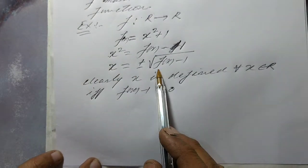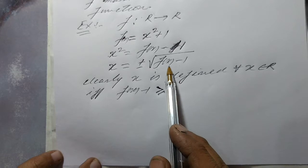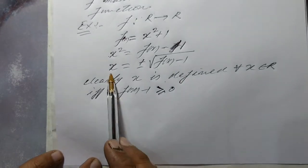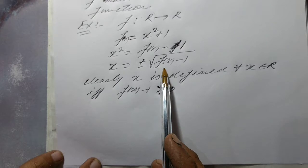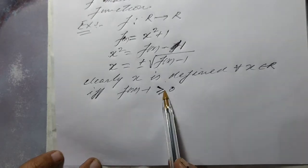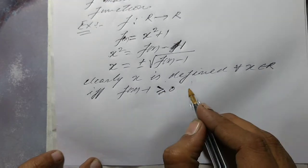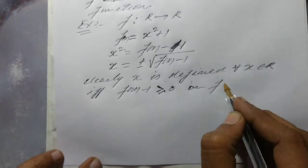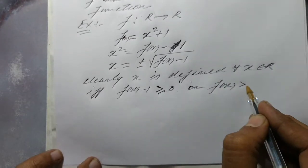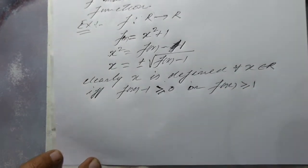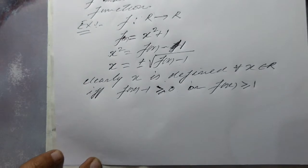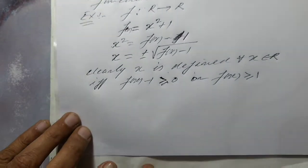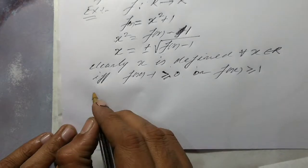Ultimately, we come to the conclusion that f(x) minus 1 may not be negative. So x is defined for all those values of f(x) for which f(x) minus 1 is greater than or equal to 0, or f(x) is greater than or equal to 1. And range is the possible values of f(x) for which x is defined. We already know that.